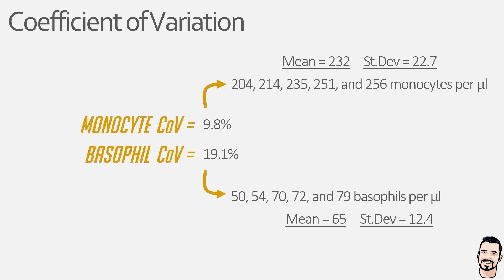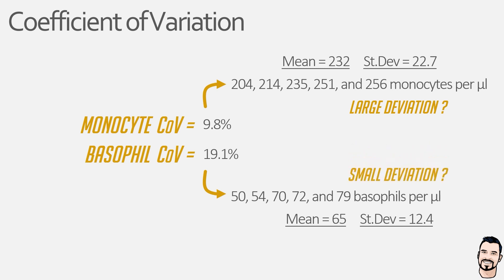The mean of our monocytes is 232, which is a relatively large number compared to that of our basophils, which is a relatively small number. Calculating our standard deviations, we can see that the standard deviation of monocytes is 22.7, suggesting a relatively large deviation, compared to that of basophils, which is only 12.4, suggesting a relatively small deviation. Therefore, if we were to use standard deviation alone, we might conclude that the data for monocytes is more dispersed than that of basophils — which would be incorrect.